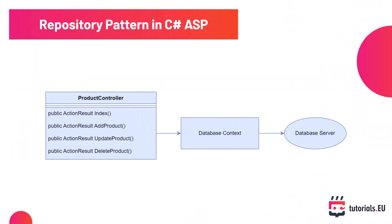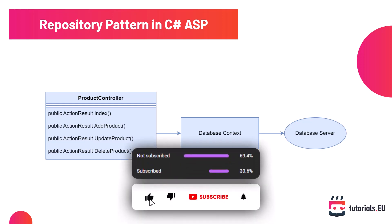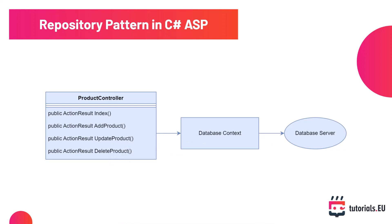Chances are that if you have ever created a C# ASP.NET MVC application, your code looks exactly like this on screen right here. You have a controller for any kind of model that you have — let's say a product controller, because you have an application that manages products like shoes or whatever. Inside of that product controller, you usually have your CRUD operations: something like index to get all the product information, add product, update product, delete product, and so on.